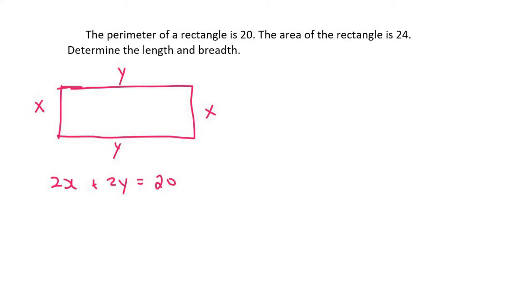Then it tells us that the area is 24. Now the area would be x times y, so the area would be x multiplied by y, but they've told us that that is 24.